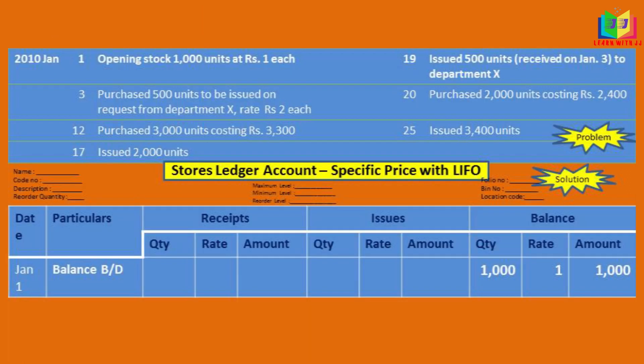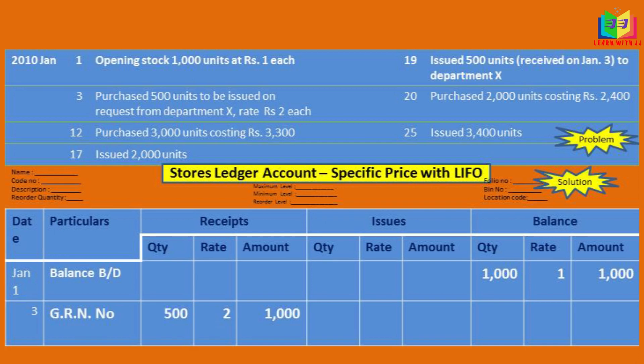First, we have an opening balance of 1000 units at rupees 1. So I will write it in the balance column: 1000 units, rupees 1, amount 1000. And on the 3rd, purchase 500 units to be issued on request from department X, at a rate of rupees 2 each. This is reserved for that particular job — this is a specific price purchase.